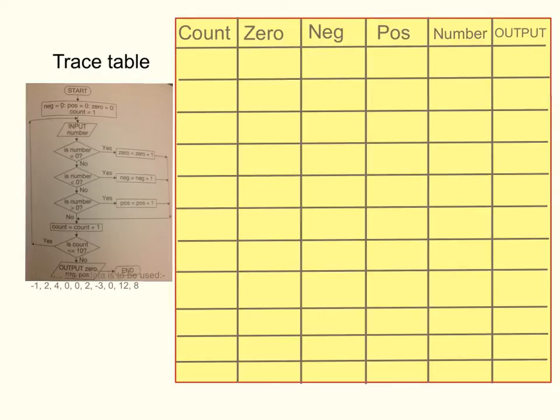The flowchart begins with start, and in the process box, we have our first count. So, I'm going to just draw in my 1, and it says negative is 0, positive is 0, 0 is 0. So we'll put these values in our trace table. So, 0 is 0, negative is 0, and positive is 0. When it comes to our number column, we're going to look at our test data. Now, I've just placed in the test data here from the previous slide. So we're going to start off with the first test data, which is minus 1. That's the first piece of data we're going to test, so we put minus 1 in there.